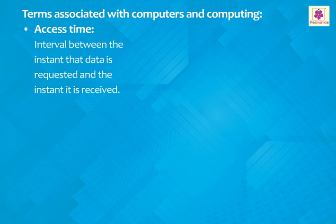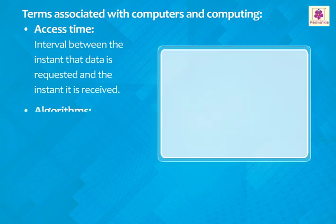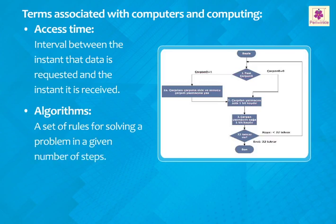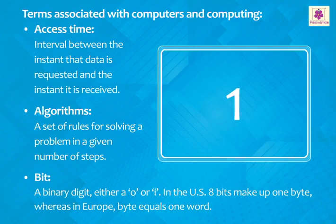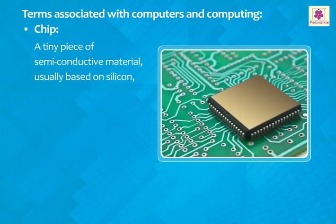Terms associated with computers and computing: Access time is the interval between the instant that data is requested and the instant it is received. An algorithm is a set of rules for solving a problem in a given number of steps. A bit is a binary digit — either a 0 or a 1. In the US, eight bits make up one byte, whereas in Europe a byte equals one word.